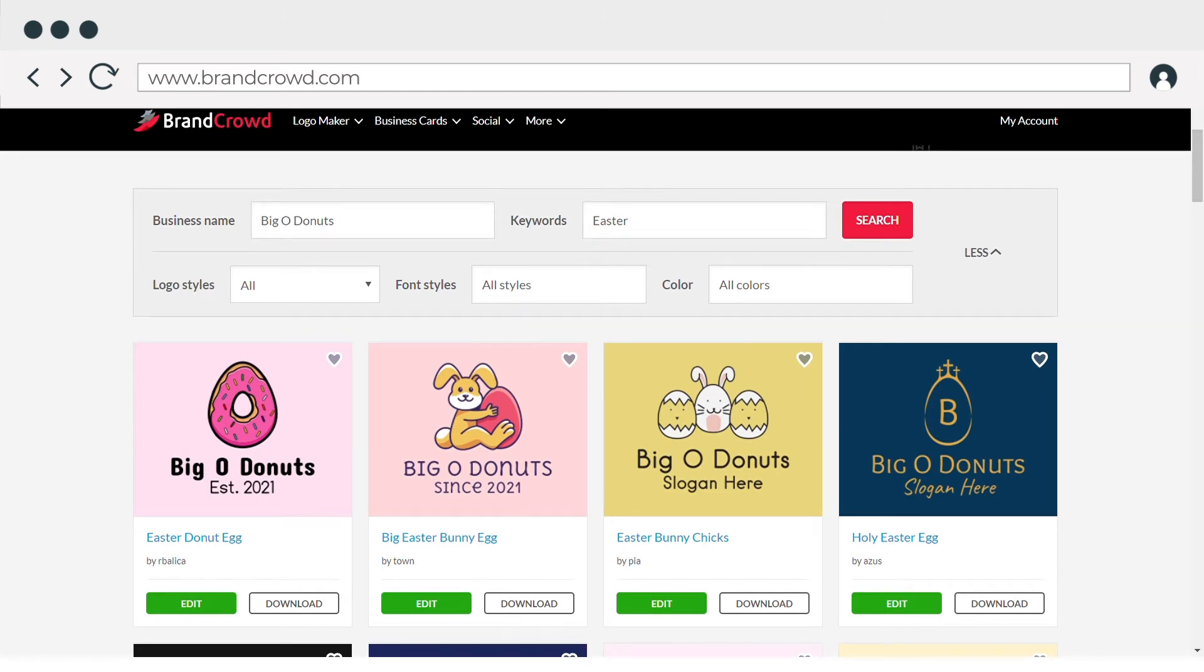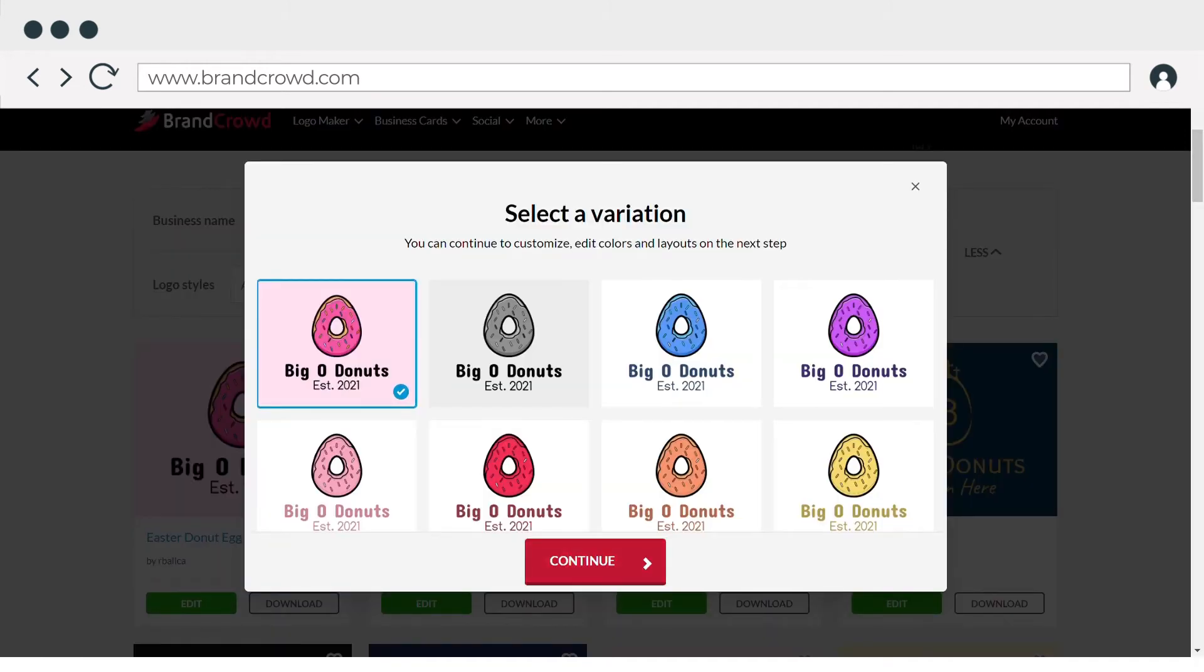No worries, you can use your logo even outside the Easter season. We'll choose Easter Donut Egg for our example, and our business is a pastry shop specializing in donuts. Click the template, wait for a few seconds, and the logo maker will appear on the screen.